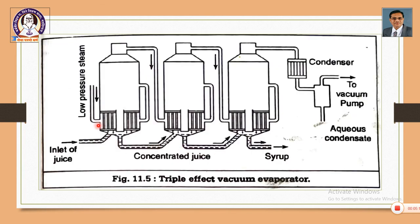Let us revise the design once again. The first evaporator has an inlet for juice and an inlet for steam. The two plates convert the evaporator into three chambers: top chamber, bottom chamber, and middle chamber for steam. Steam from the upper chamber is passed over to the calendria of the second evaporator. From the top of the second, it is connected to the calendria of the third. The last evaporator top is connected to a condenser and vacuum pump, and there is an outlet for syrup.